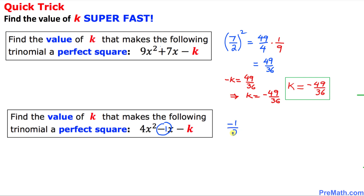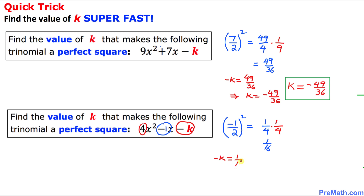We always divide negative 1 by 2, then square that, giving us positive 1 over 4. Our next step is to focus on the leading coefficient of x squared. We divide 1 over 4 by 4 — dividing by 4 is the same as multiplying by 1 fourth — which gives us 1 over 16. We set negative k equal to 1 over 16, so k is simply negative 1 over 16.